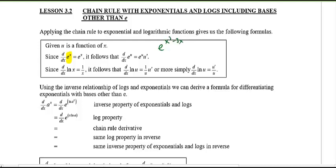That expression is of the form e to the u, where u is another function. From the chain rule, the derivative of a composite function is the derivative of the outside function — which would be e evaluated at the inside function u — multiplied by the hook-on factor, which is the derivative of u, or u prime. So in this example, the derivative would be e to the x cubed minus 3x, times 3x squared minus 3.